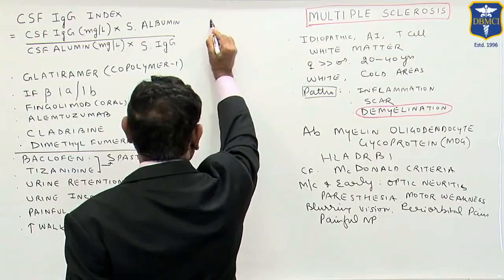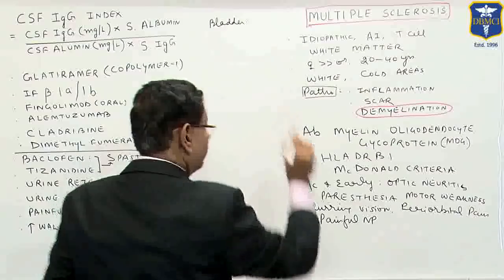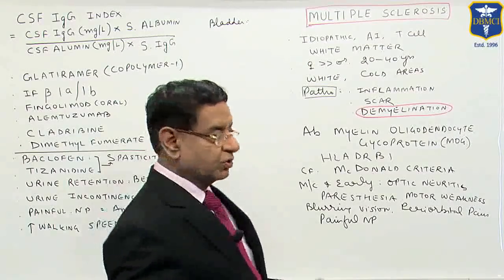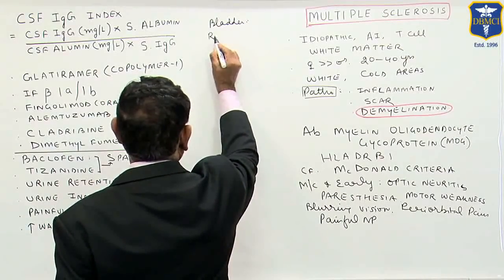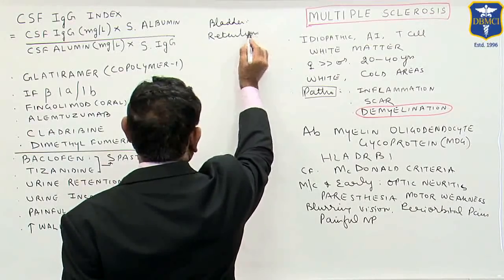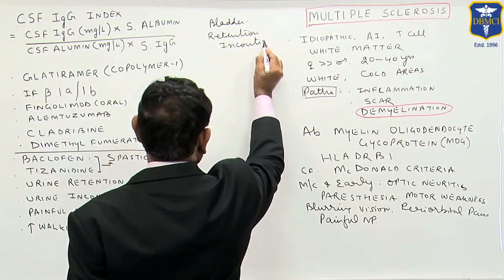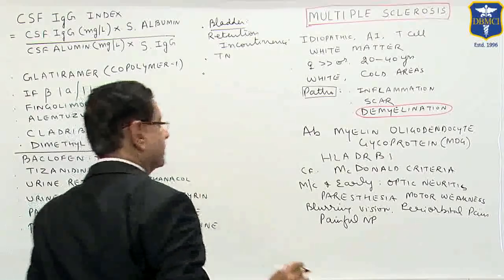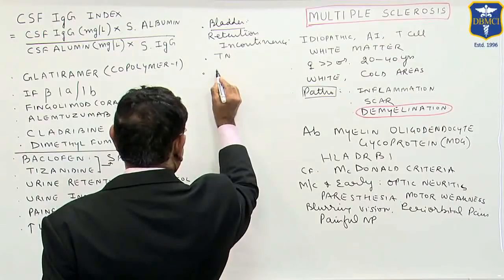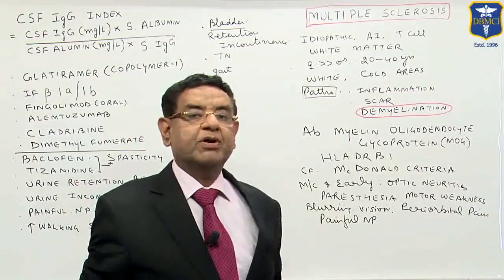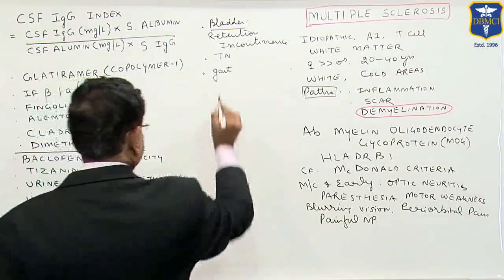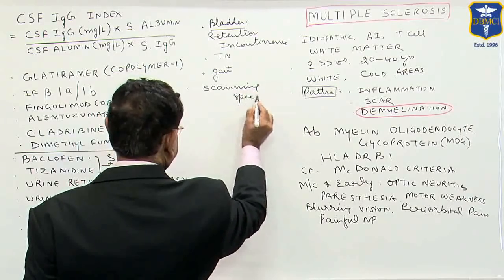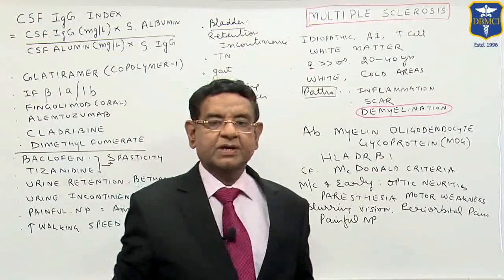Other features include bladder involvement — there can be urine retention or incontinence, both ways. There can also be trigeminal neuralgia. The patient may have gait problems or ataxia because of cerebellar involvement, and scanning speech is also a feature in these patients.